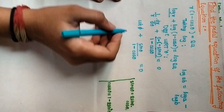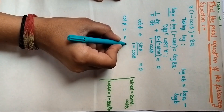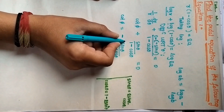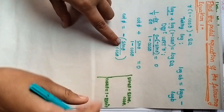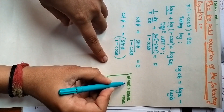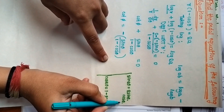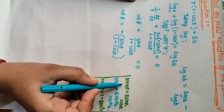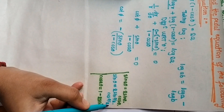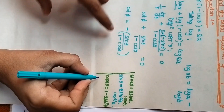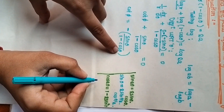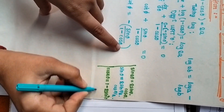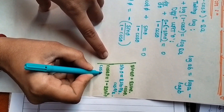We know that 1/r dr/dθ is cot φ. So cot φ plus sin theta divided by (1 minus cos theta) equals 0. We take this whole term to the right side, it becomes minus, and we get cot φ equal to minus sin theta divided by (1 minus cos theta). Now, we know that sin 2θ equals 2 sin θ cos θ, so sin θ equals 2 sin(θ/2) cos(θ/2).